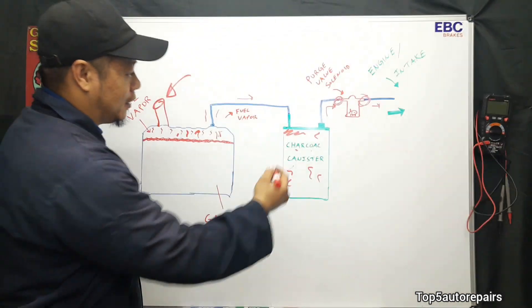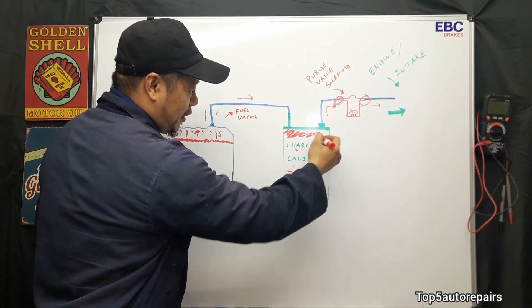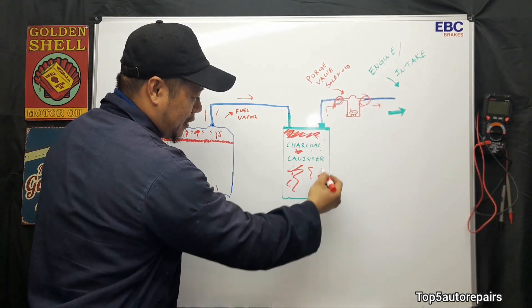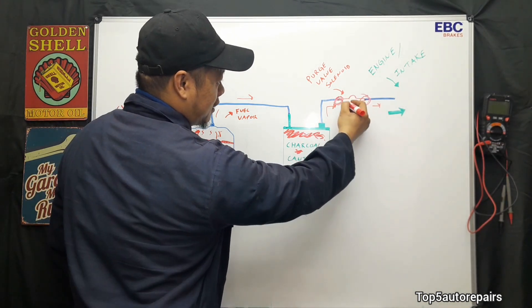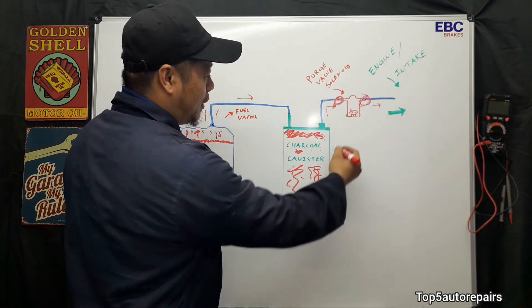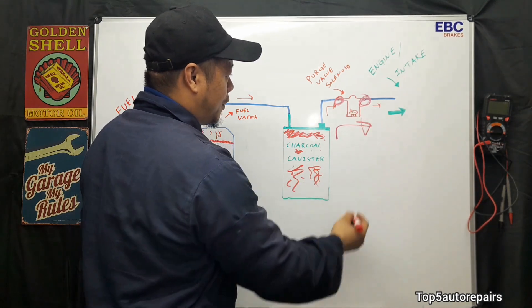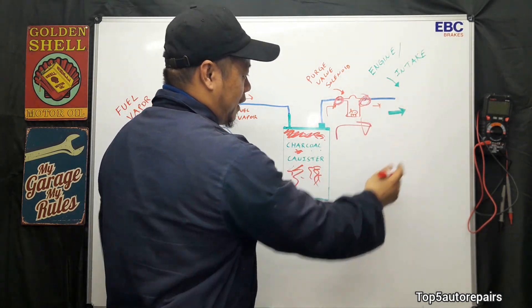It's going to end up in the charcoal canister. So all that fuel vapor is going to end up in here and it's going to become extremely saturated. And once it's extremely saturated, since the purge valve solenoid is stuck open, it's going to push a lot of fuel vapor past your purge valve solenoid and straight into your intake.